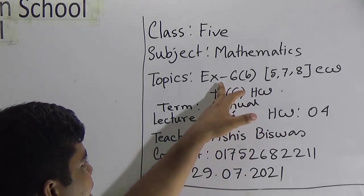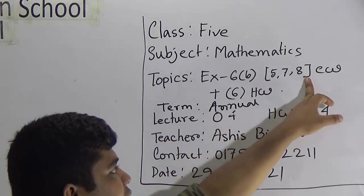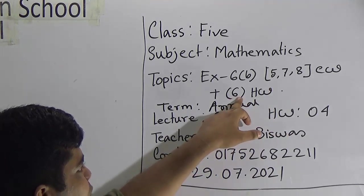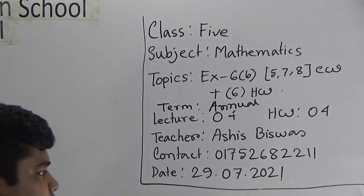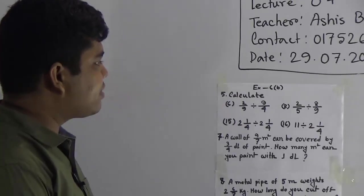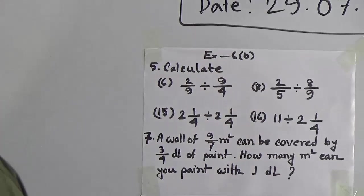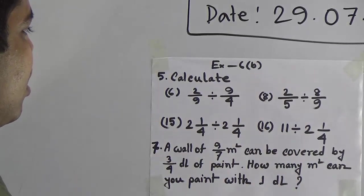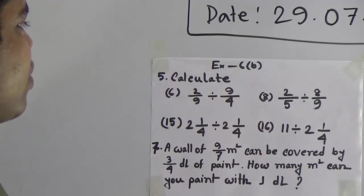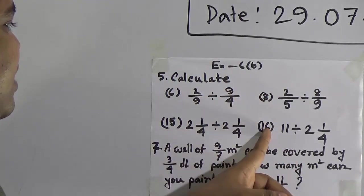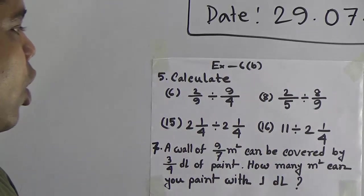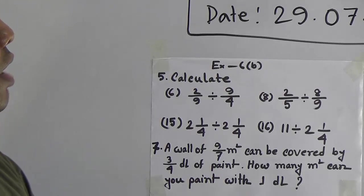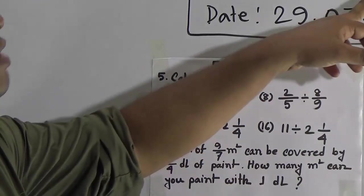From exercise 6B, we shall solve questions 5, 7, and 8 as your CW, and question number 6 will be your SW. My dear students, in question number 5 we solve only 4 problems: 6, 8, 15, and 16. But you need to practice all the problems at home — that means from 1 to 15, you must solve at home. If you face any problem, you can make a phone call to me; my phone number is given on the board.